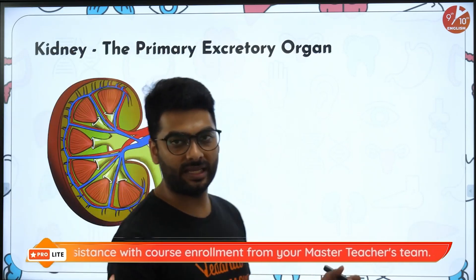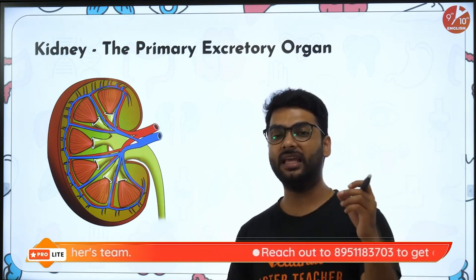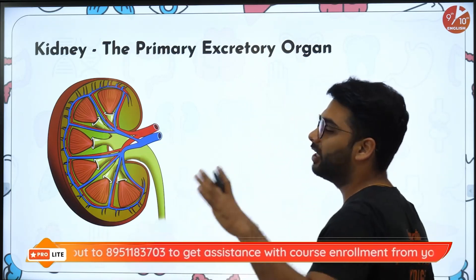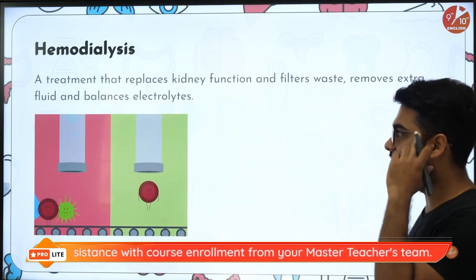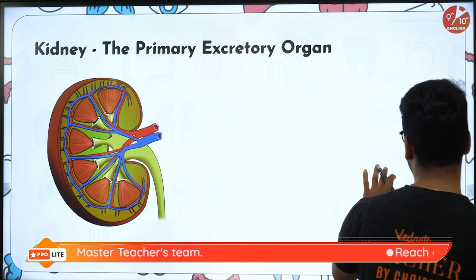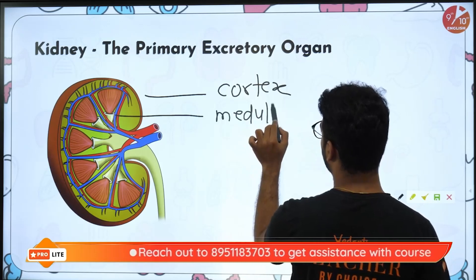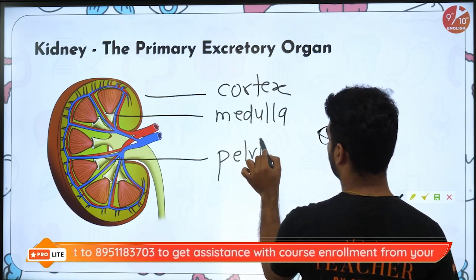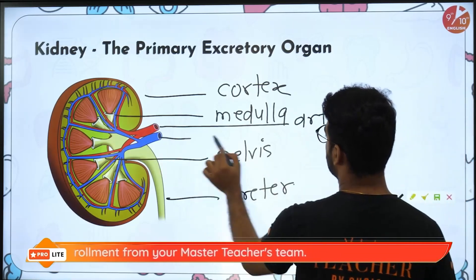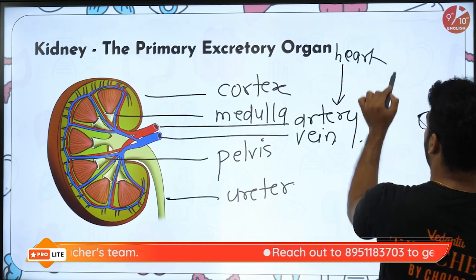Now we move on and talk about the kidney. Kidney is the excretory organ in the body. Mammals and certain amphibians all have a set of kidneys. The kidney is the reddish-brown organ, two in number, present on either side of your vertebral column. They are 10 to 12 cm in size. The outer part of the kidney is called the cortex, the middle part is the medulla, and then you have the pelvis. The renal artery brings blood from the heart, and the renal vein takes the filtered blood back to the heart.